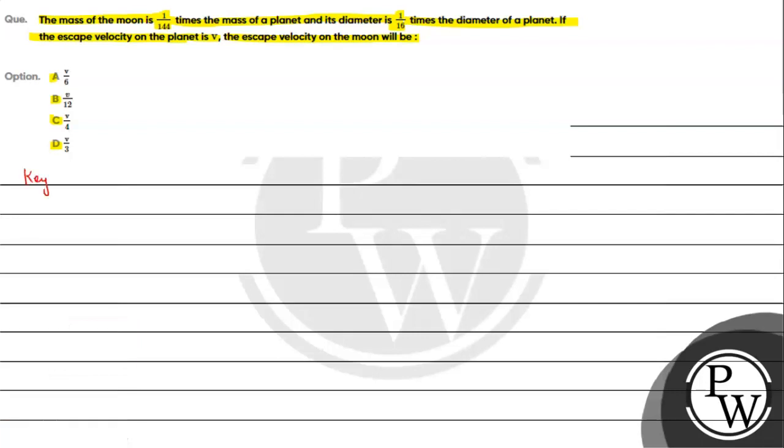For this question, we need to understand the key concept of escape velocity. Basically, this is the minimum velocity that must be given to a body so that it can escape the earth's gravitational influence, or the gravitational influence of any planet.